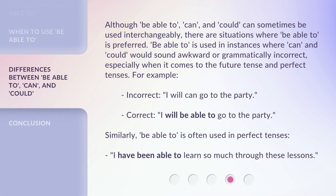Although 'be able to,' 'can,' and 'could' can sometimes be used interchangeably, there are situations where 'be able to' is preferred. 'Be able to' is used in instances where 'can' and 'could' would sound awkward or grammatically incorrect, especially when it comes to the future tense and perfect tenses.